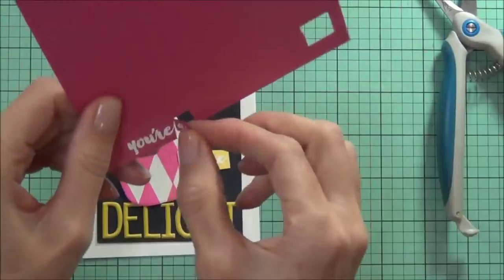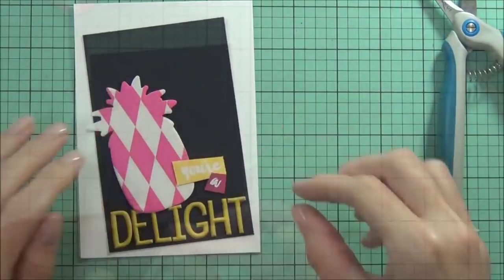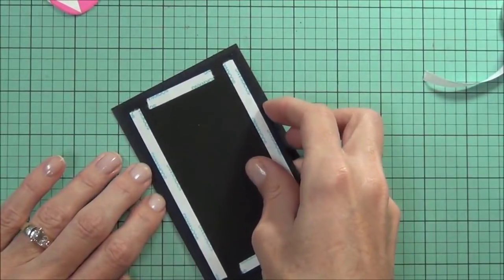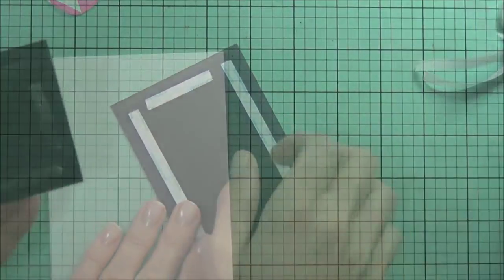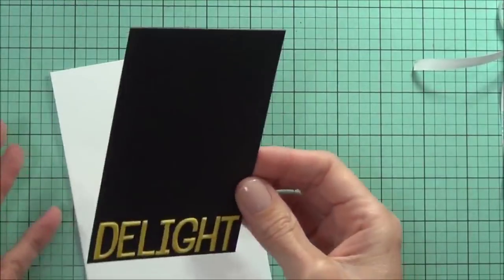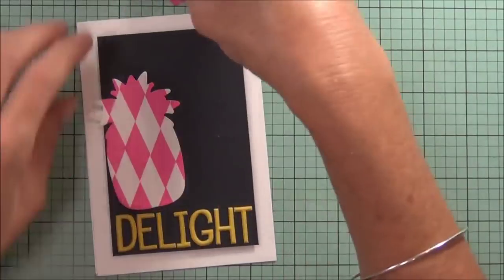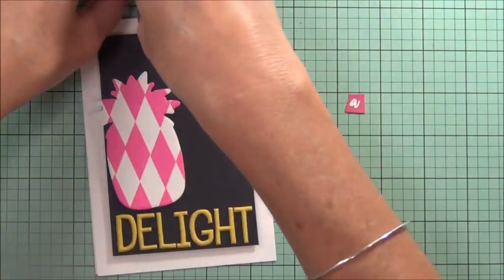And I'm gonna start assembling my card now. This is just some black fun foam, I'm holding that in place with some score tape which I find works extremely well holding cardstock to the fun foam. And then I can just pop up my little pineapple and my sentiment using some mounting tape.